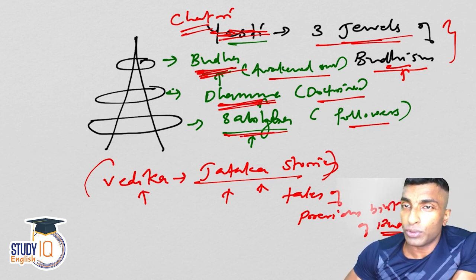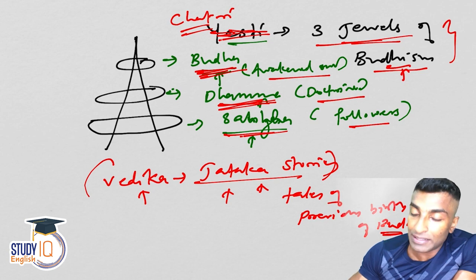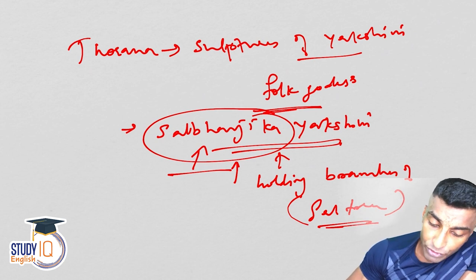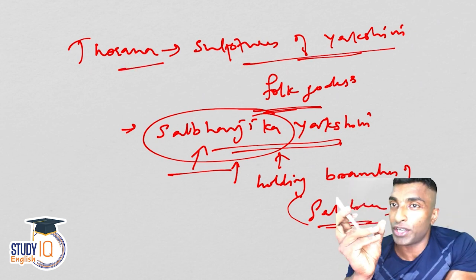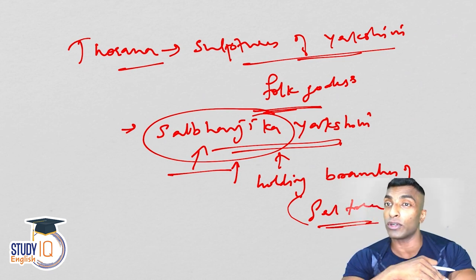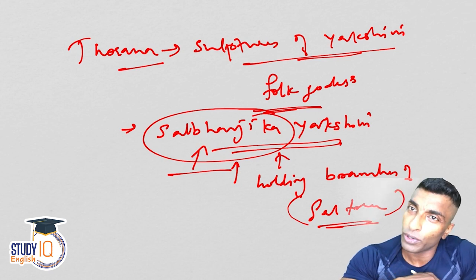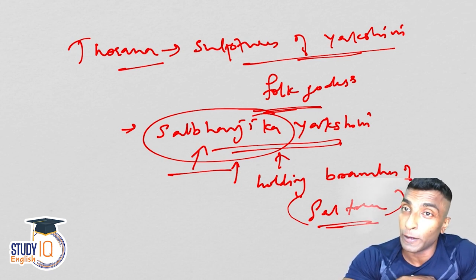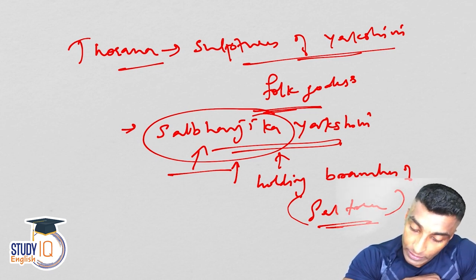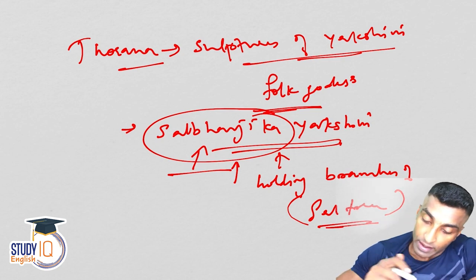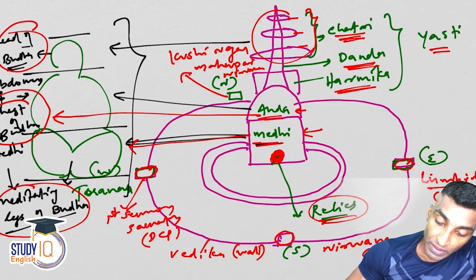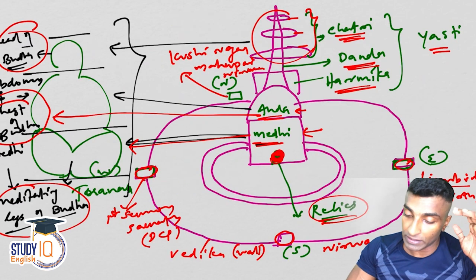Vedika also shows the Jataka stories — that means tales of the previous birth of Buddha. Tauranas are decorated with the sculptures of Yakshini. Yakshinis are the folk goddesses. They used to worship folk gods and folk goddesses during that period, not only in Buddhism but even in Jainism and Hinduism. These four gates are important — they represent the four life stages. Yasti and Chatri representing the three jewels are important to remember.